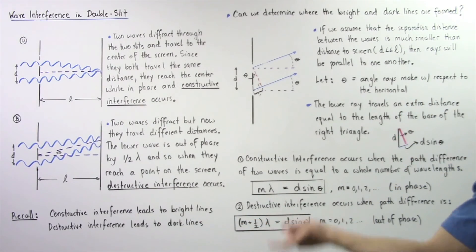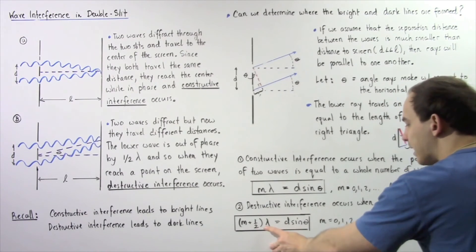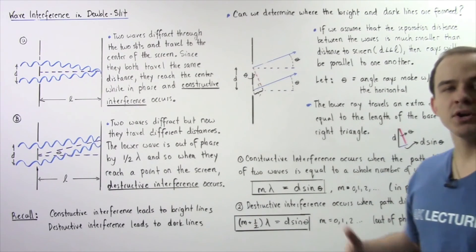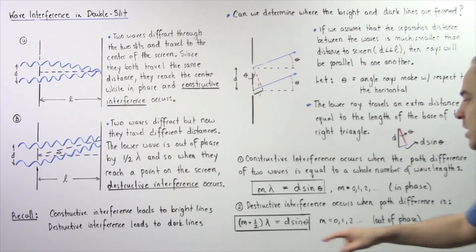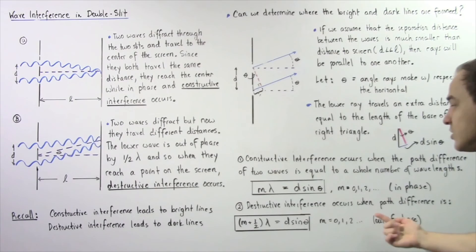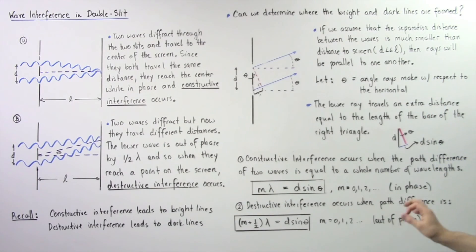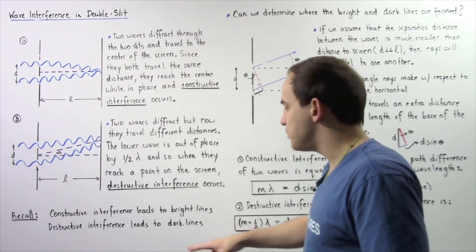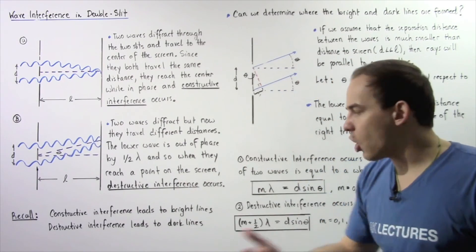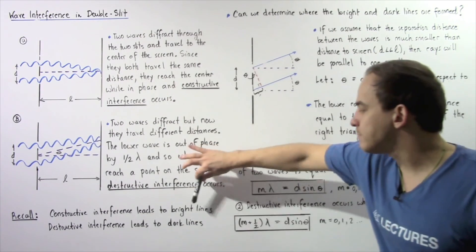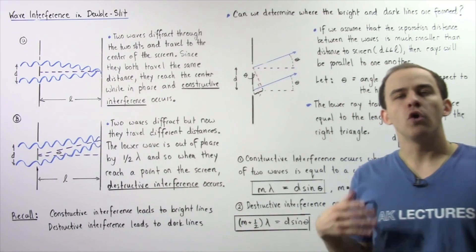The equation is: m plus one-half, multiplied by lambda, equals d multiplied by sine theta, where m is still a whole number — 0, 1, 2, 3. This factor comes from the fact that to produce destructive interference the waves must be out of phase. This equation leads to destructive interference, producing dark lines or dark fringes, while the constructive interference equation produces bright lines or bright fringes.